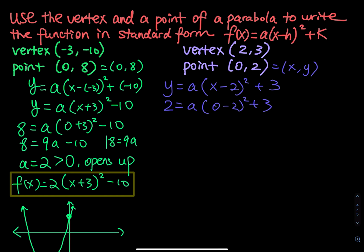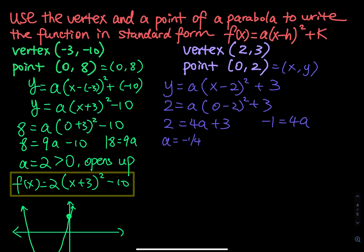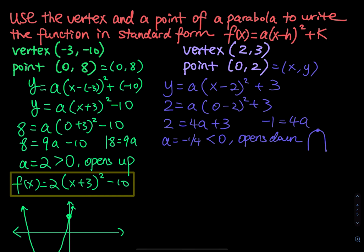And then we solve for a: 2 equals to 4a plus 3. So we have 2 minus 3 equals to negative 1, which equals to 4a. So a is equal to negative 1 over 4. This is negative, which means the parabola opens down. As a result, this vertex point is a maximum.